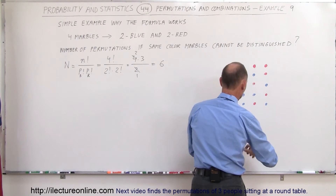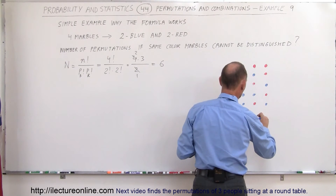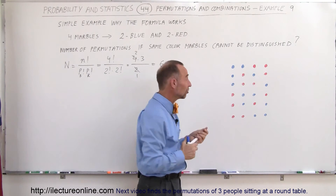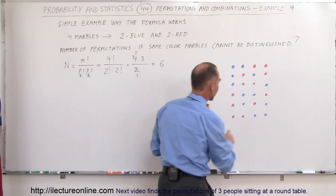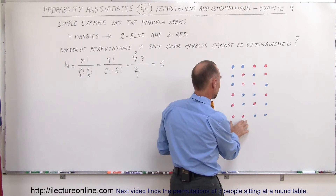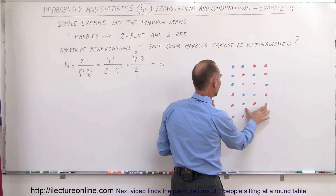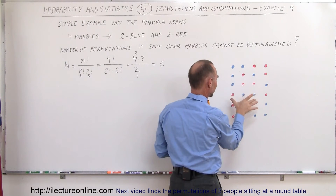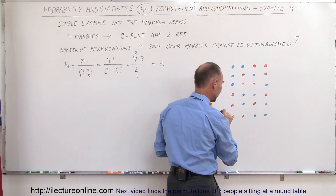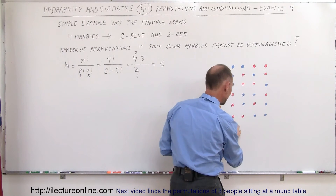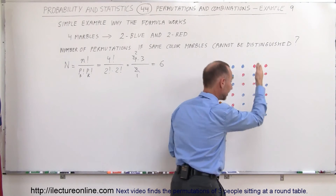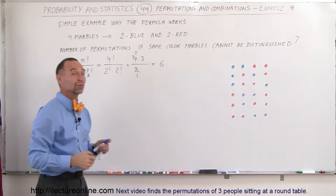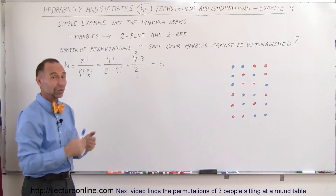Are there any other ways in which we can rearrange those? I've got blues there, blues there, blues there, blues there, there and there, and the same with the reds — reds, reds, reds, reds, reds — and I cannot see any other way. So it looks like I have six permutations, which is the same as the six permutations I was expecting. So you see the formula does work out.